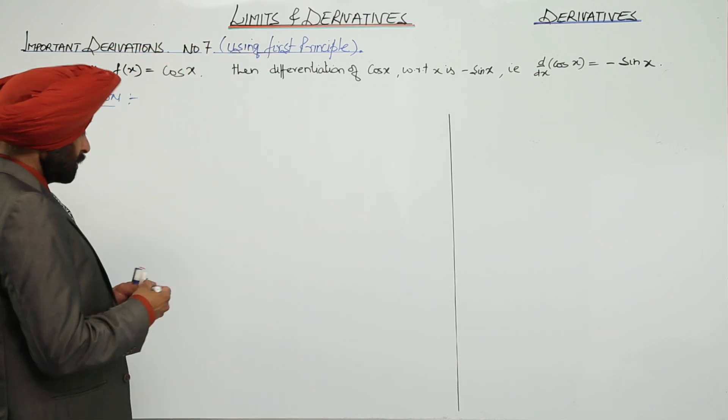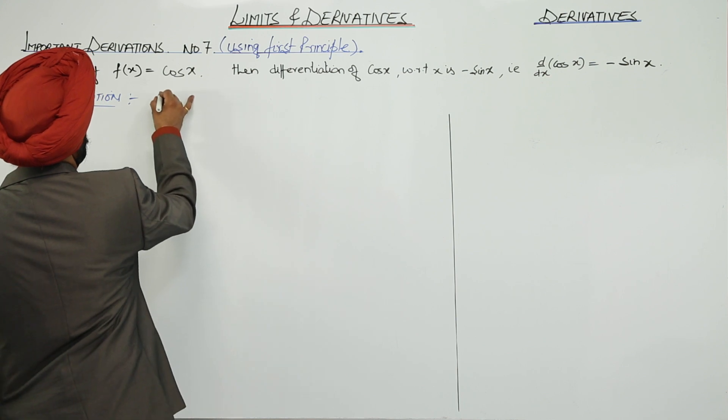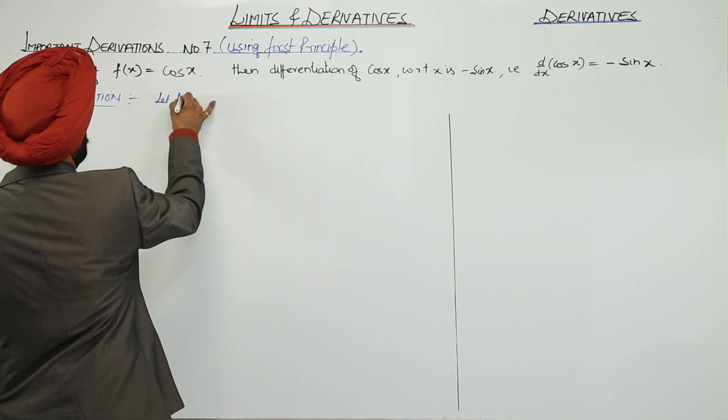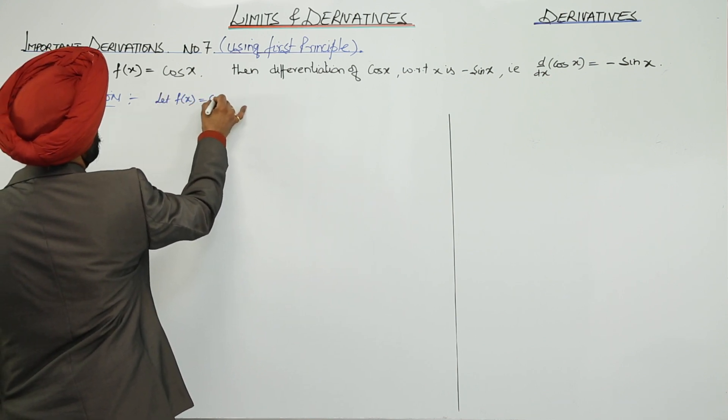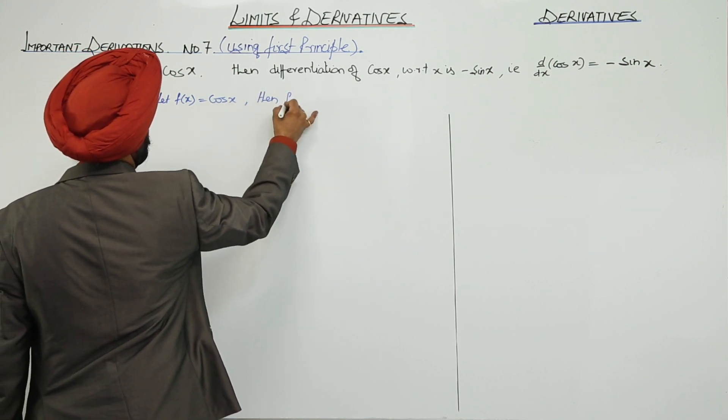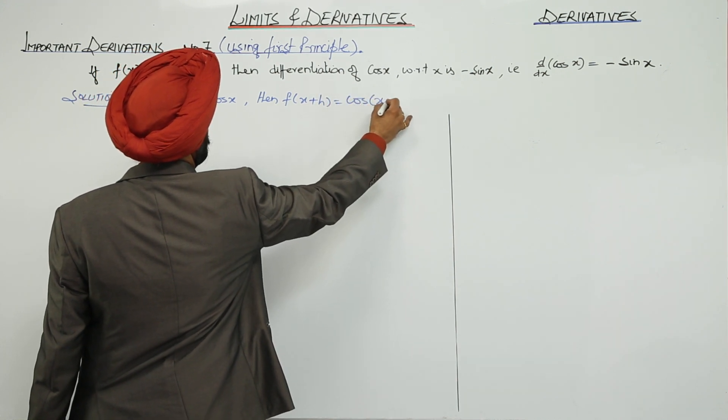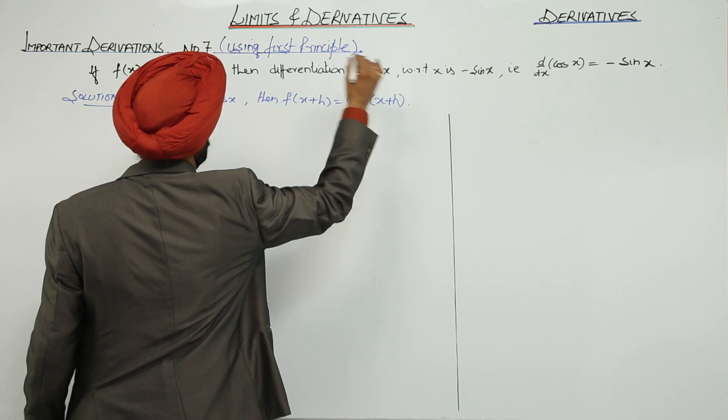Is it clear? Now, let f(x) is equal to cos x, then f(x + h) is equal to cos(x + h).